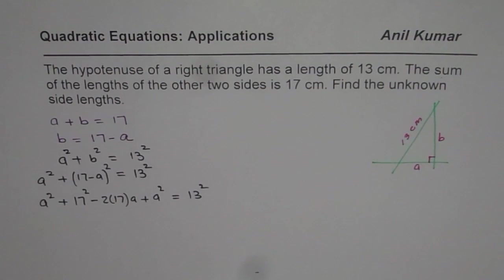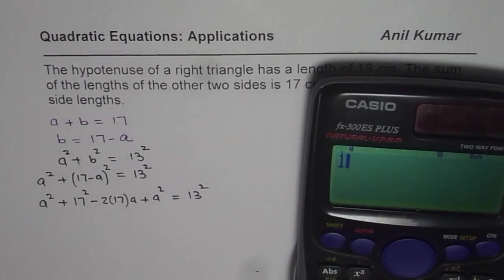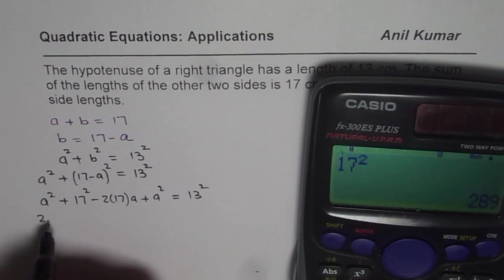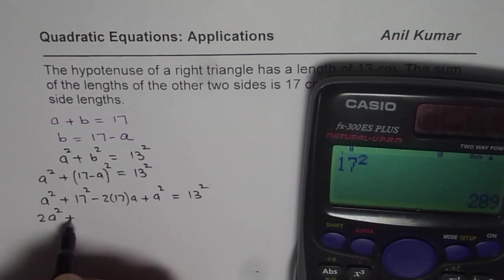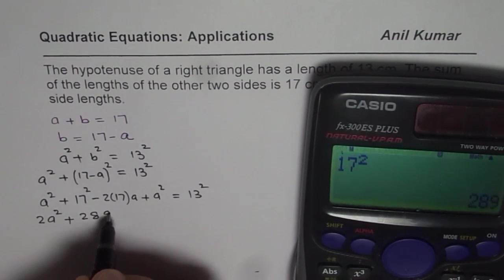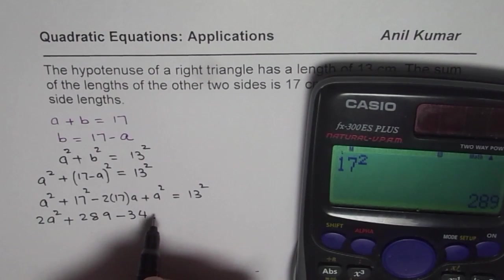Let us take the help of calculator to calculate these squares. 17² is equal to 289. A² + A² is 2A². So I will combine that 2A² + 17² is 289.